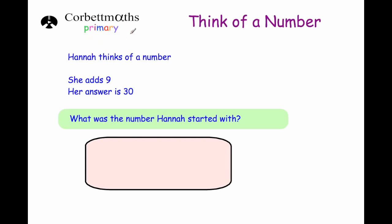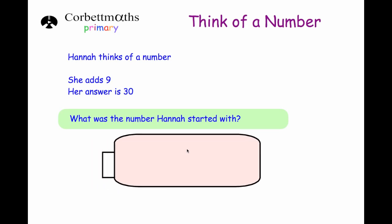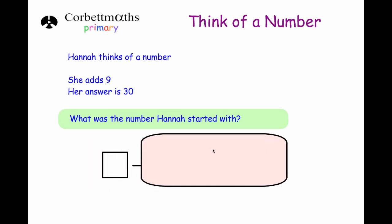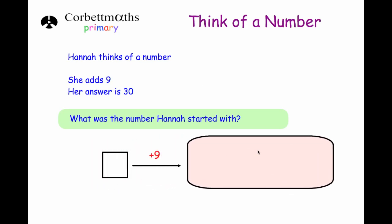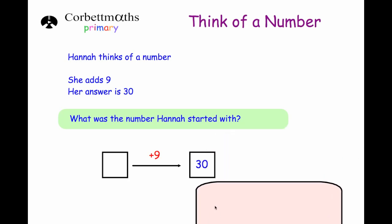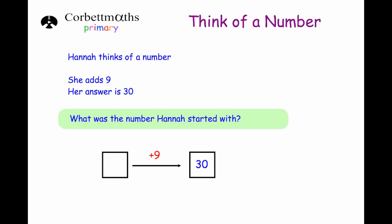Welcome to this Corbettmaths primary video on 'think of a number' type questions. Here's a typical question: Hannah thinks of a number, she adds nine and her answer is 30 — what was the number Hannah started with? Let's think about the information we've been given: she thinks of a number, she adds nine, and the answer is equal to 30.